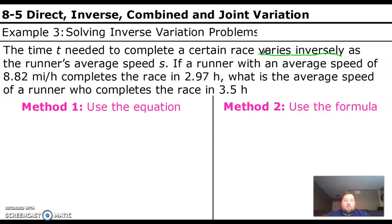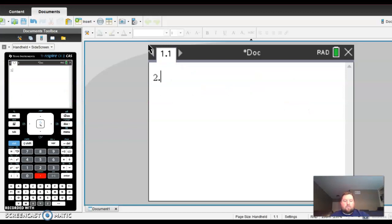Once again, two methods here. We can use the equation. So y equals k over x. To do that, we need to first find out what k is. So 8.82 miles per hour completes the race in 2.97 hours. I'm going to call my miles per hour my x and my hours y. Again, you can switch those two and come up with the same answer. It doesn't matter. So 2.97 is equal to k over 8.82. So we just need to multiply by 8.82. So we pull up our calculator for this one. 2.97 times 8.82. And we get 26.195.